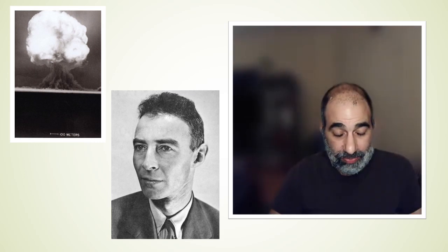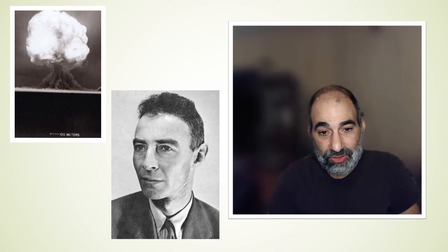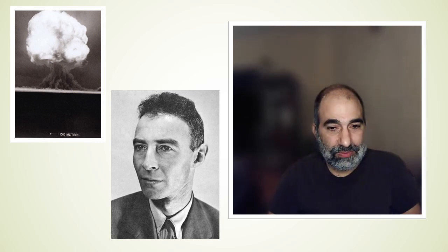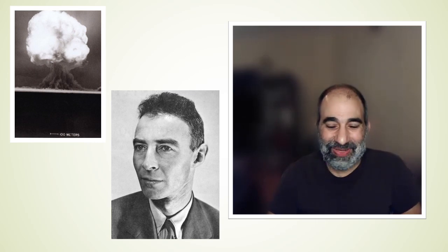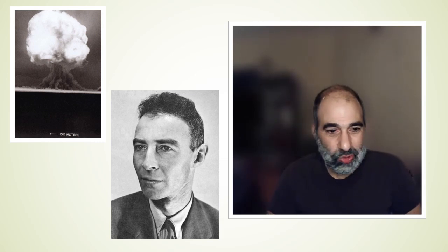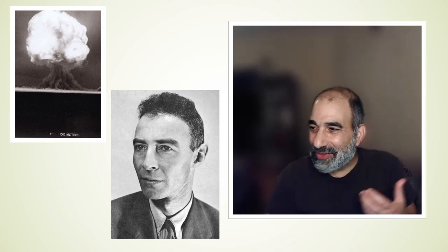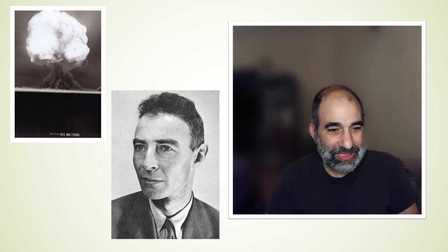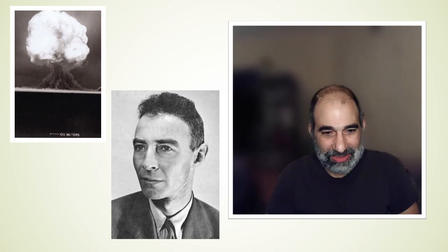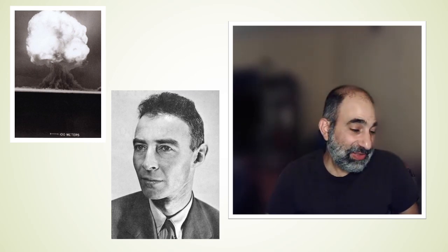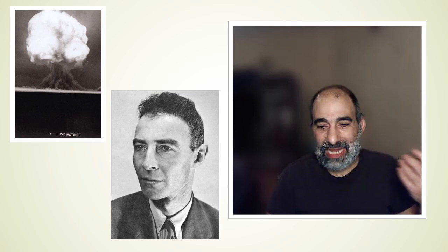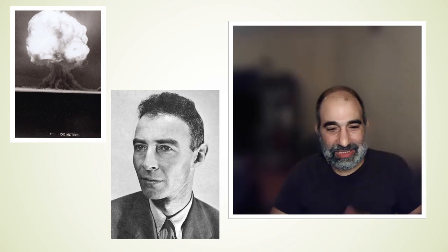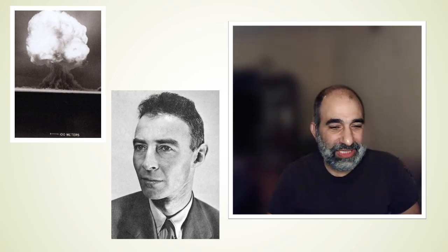Oppenheimer in the movie does lose his security clearance, which is accurate. One thing they didn't mention — not wrong, just omitted — is that he did get the clearance back, though that didn't happen until 2022, long after he died. There's also a scene where Truman basically calls Oppenheimer a crybaby right as he's leaving. Apparently Truman did make that reference, but not right in front of him — he said it to an aide a bit later. So there was some Hollywood dramatization there.